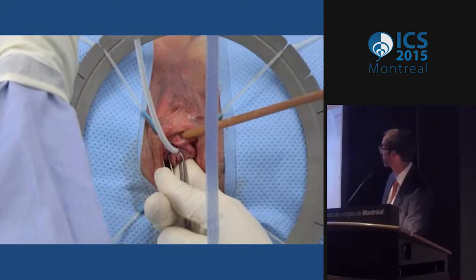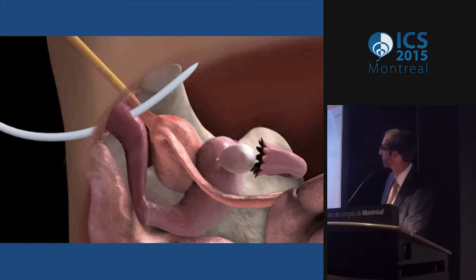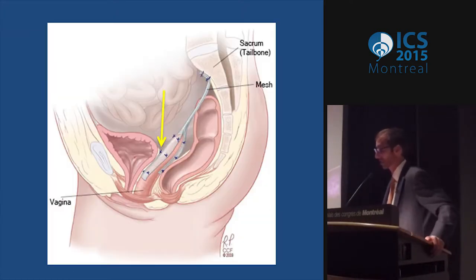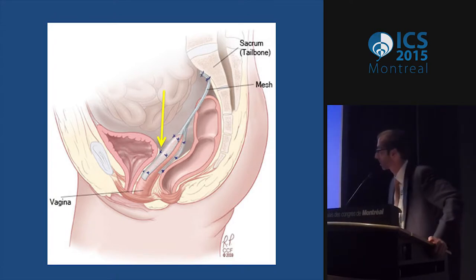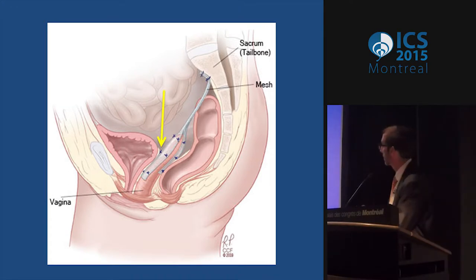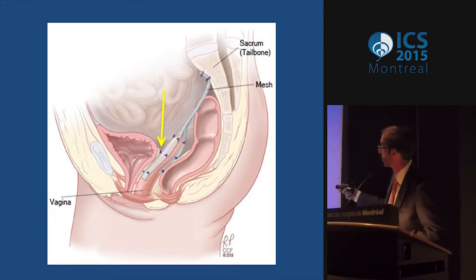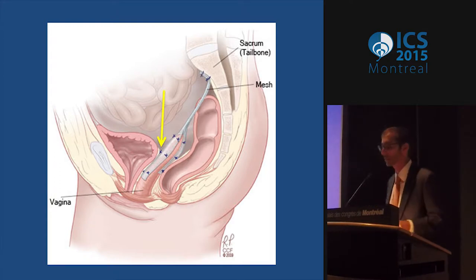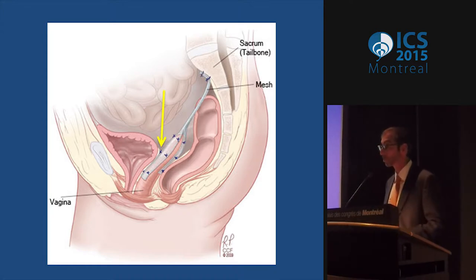For instance, in doing a classic TVT sling, as you pass the trocar near the urethra and bladder, you'd want the bladder generally decompressed to have less chance of hitting it. On the other hand, in an abdominal sacral colpopexy, when dissecting the vagina or the bladder off of the vagina, it's sometimes not easy to tell exactly where things are. By filling the bladder and seeing it distend, you get a better sense of exactly where it is and where to stay away from.